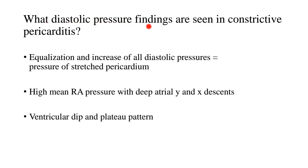What diastolic pressure findings are seen in constrictive pericarditis? These are the three cardinal findings: number one, equalization and increase of all the diastolic pressures, and they become equal to the pressure of the stretched pericardium; second, a high mean right atrial pressure with deep atrial Y and X descents; and third, a ventricular dip and plateau pattern which is seen in diastole.